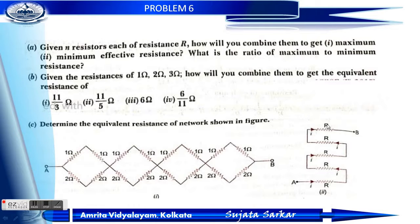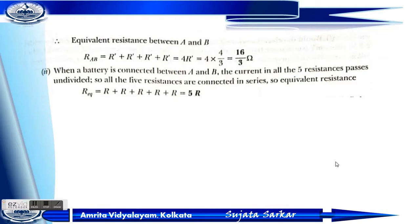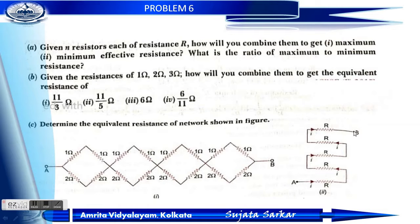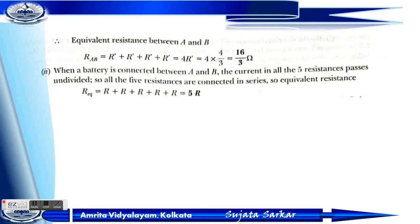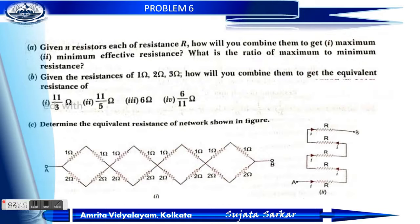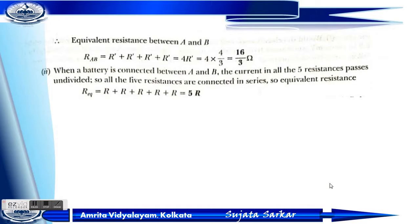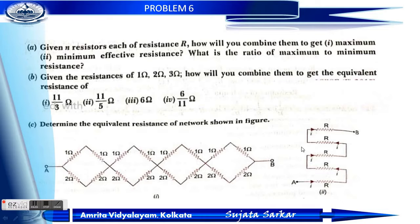For another circuit with a battery connected between A and B, where all resistors are connected in series — there are 5 resistors, so the equivalent resistance is 5R ohm.